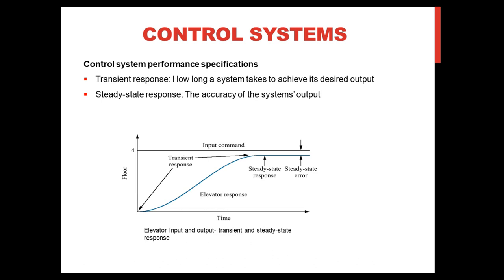So, if the elevator takes a long time to reach the fourth floor, this indicates that the transient response of the elevator is slow, which might cause the passengers to become impatient. If the transient response is fast, then the passenger's comfort would be sacrificed.